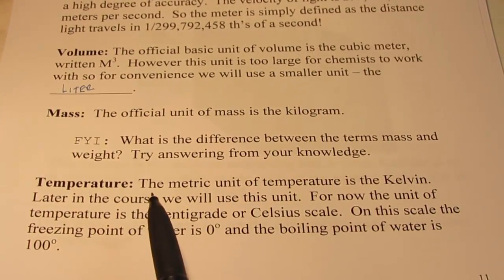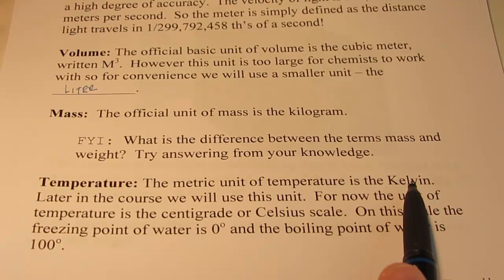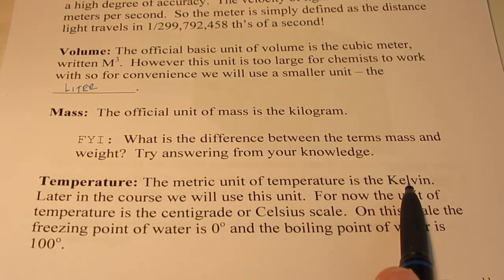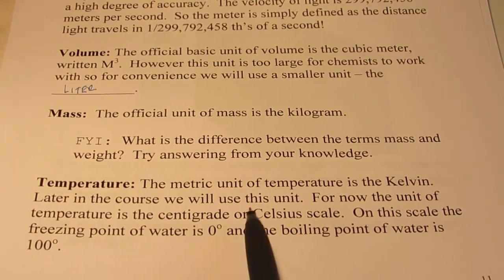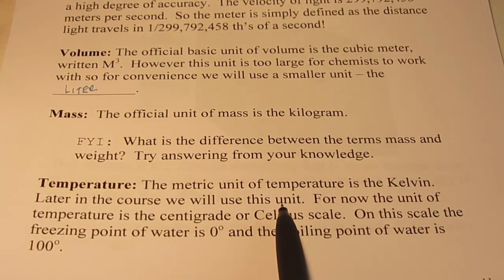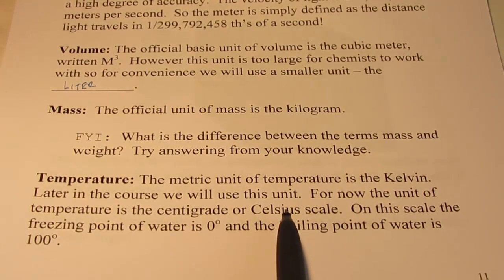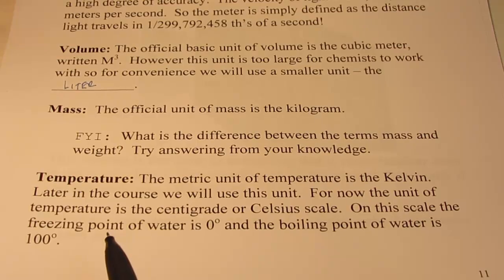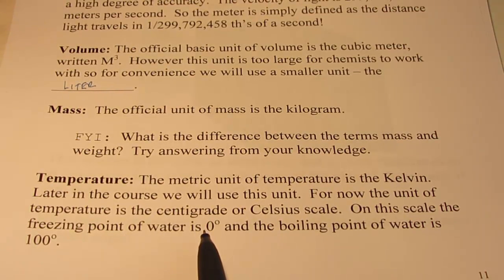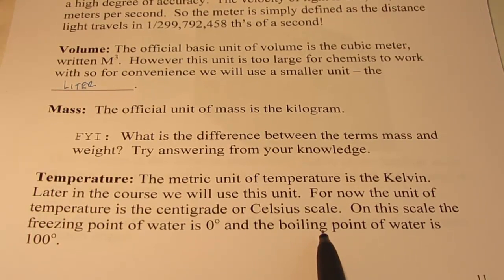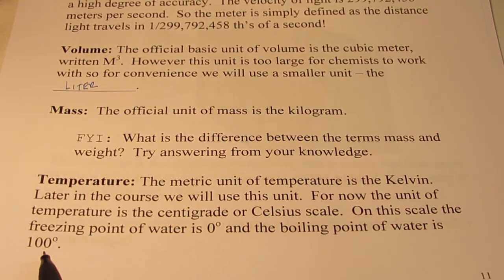Temperature. The unit of temperature is something called the Kelvin. Now that might be brand new to you. I'll bet you expected me to say Celsius or Centigrade. But in reality, the unit of temperature is something called the Kelvin. Later in the course, we will use that unit extensively. For right now, the unit of Centigrade or Celsius is what we will use. On this scale, the freezing point of water is defined as zero degrees Celsius. And the boiling point of water is 100 degrees Celsius.